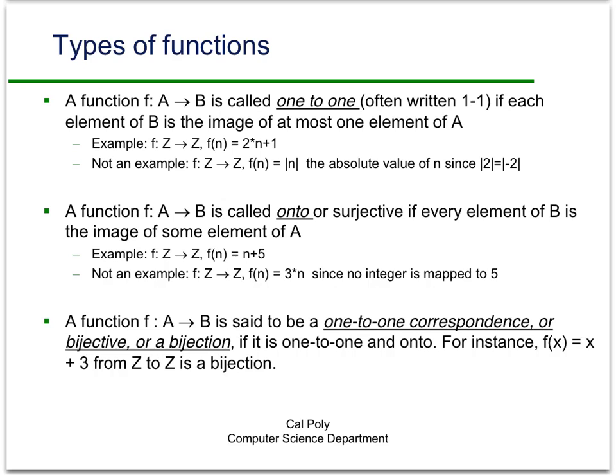So in other words if you look at 10 for instance, what gets mapped to 10? 5. Because 5 plus 5 equals 10. Something that's not an example of onto is if you just multiply each integer by 3, then no integer is going to be mapped to 5.